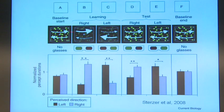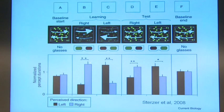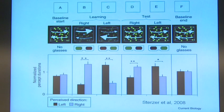And you make sure that they associate it with wearing those glasses. So if they wear the green on their left eye, they see the one that rotates to the right. If they wear the green on their right eye, they see the one that rotates to the left.